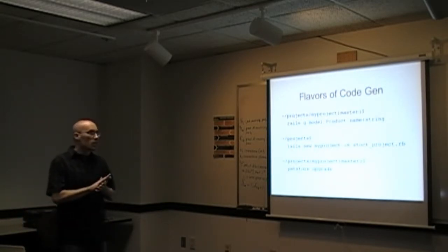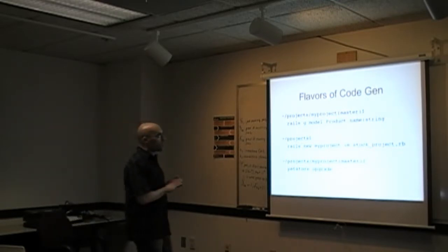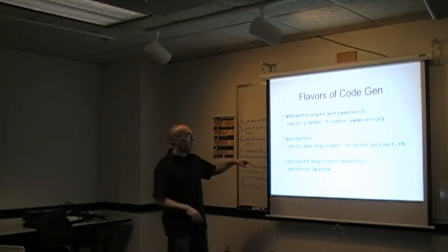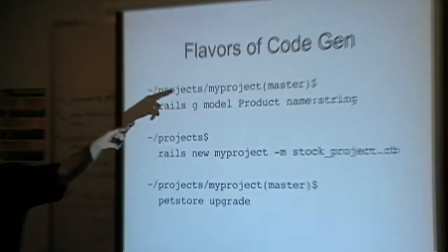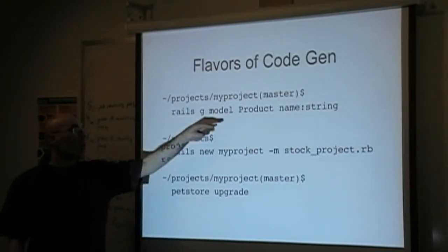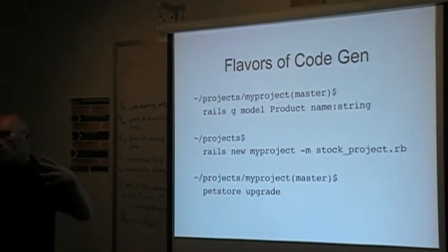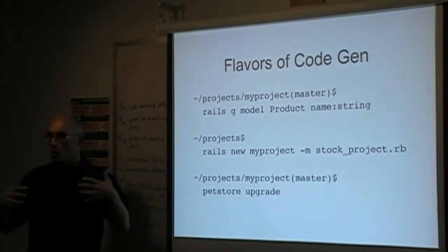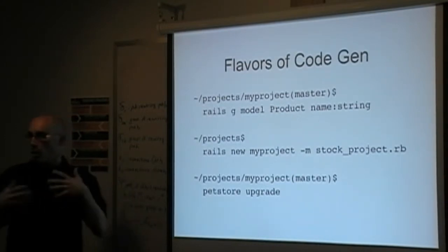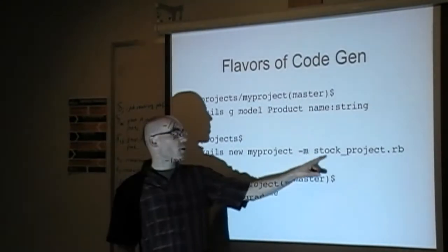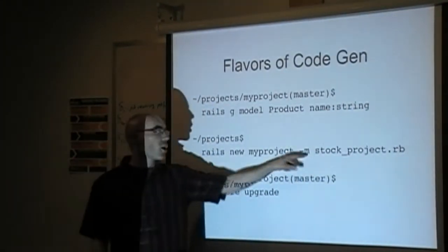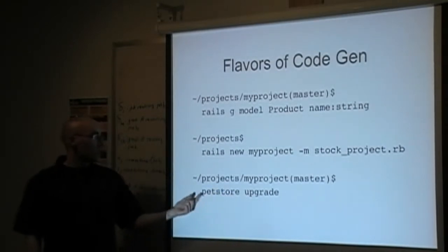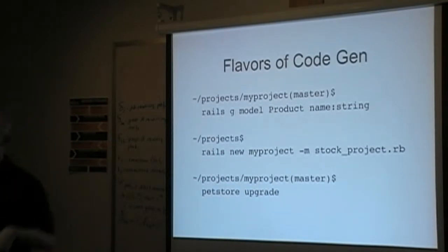I'll talk about three flavors of code generation you tend to see on projects. The first is the typical Rails generator — in Rails 3, you say 'rails generate model,' give it a product name and a series of arguments, and it creates a product model. With an application template, it's used when you're creating a new Rails project and want to do a bunch of configuration immediately after creation — install gems, run scripts. And then finally, as a command line app, you run an upgrade command to do code generation on top of your project.